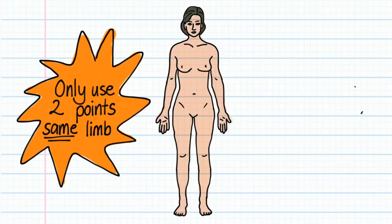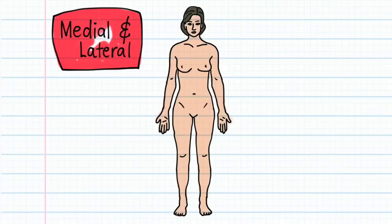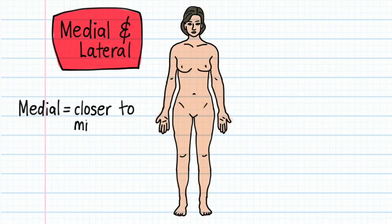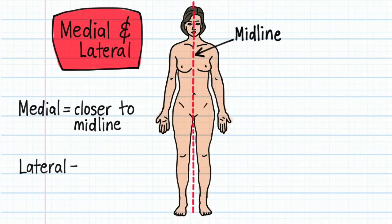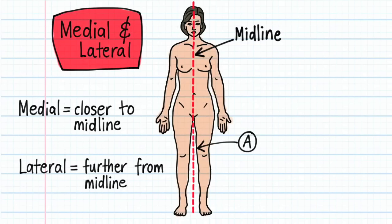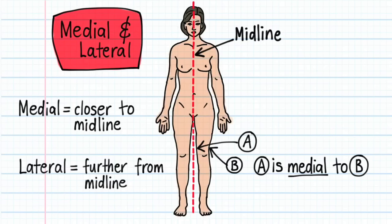Next are the terms medial and lateral. Medial means any point closer to the midline of the body. The midline is an imaginary line that cuts the body in half vertically. Lateral means any point away from the midline. For example, in this drawing, point A on the leg is medial to point B, because point A is closer to the midline. Alternatively, you could say that point B is lateral to point A, because point B is further away from the midline.